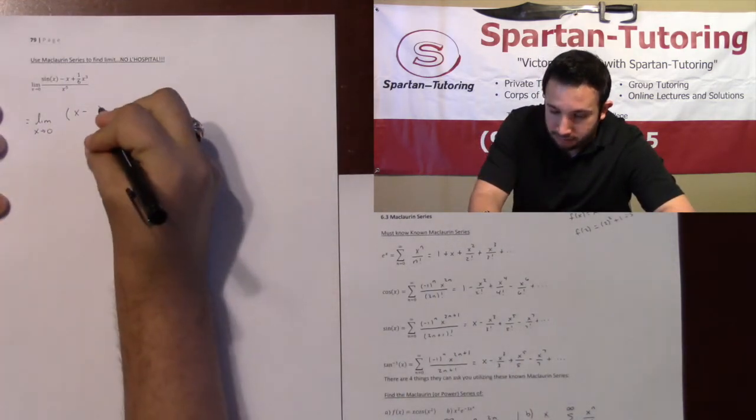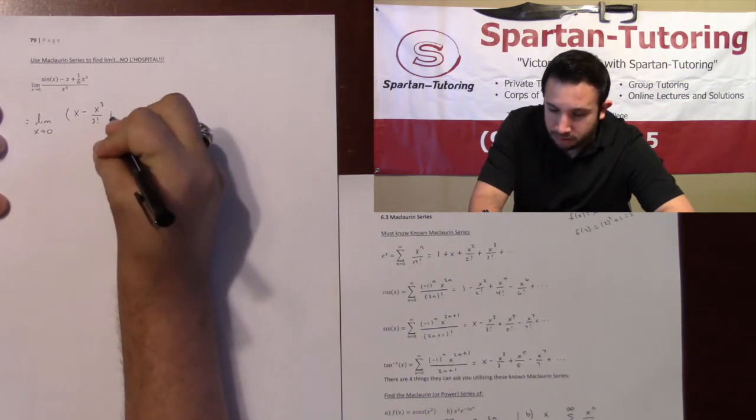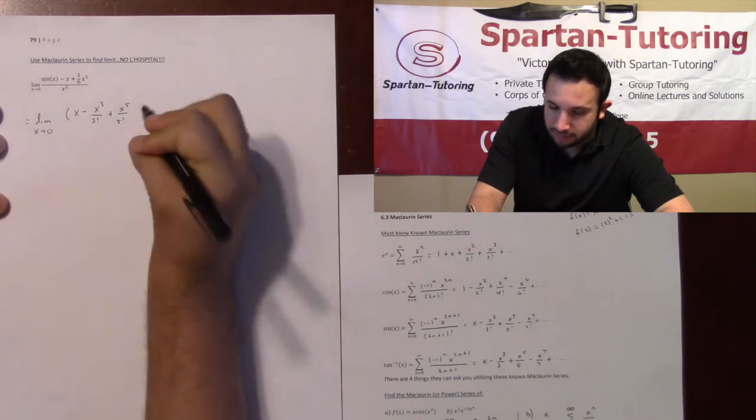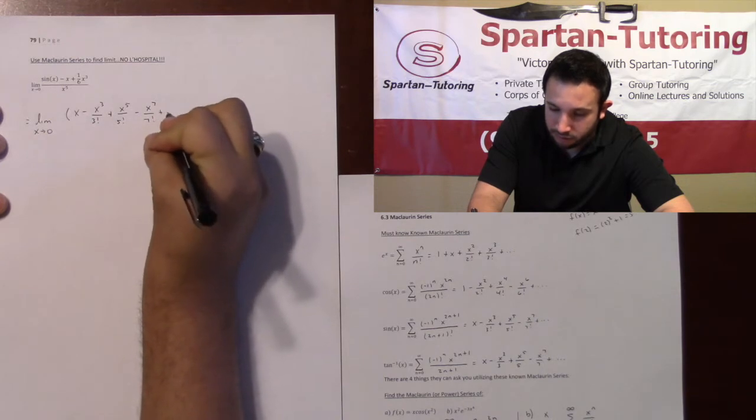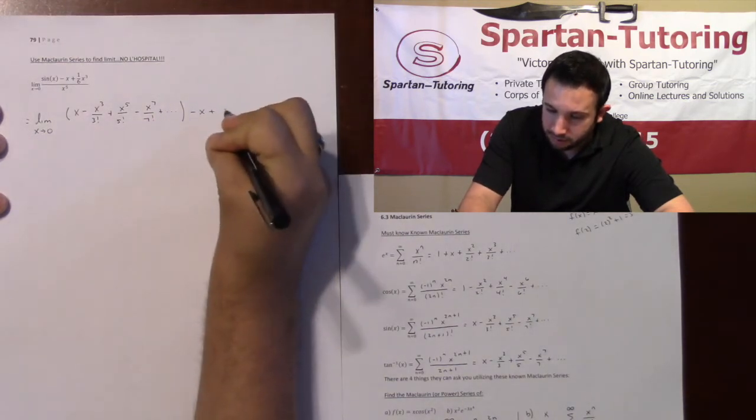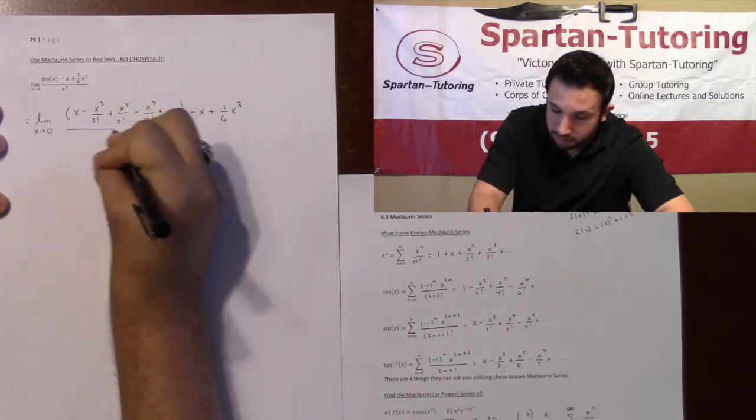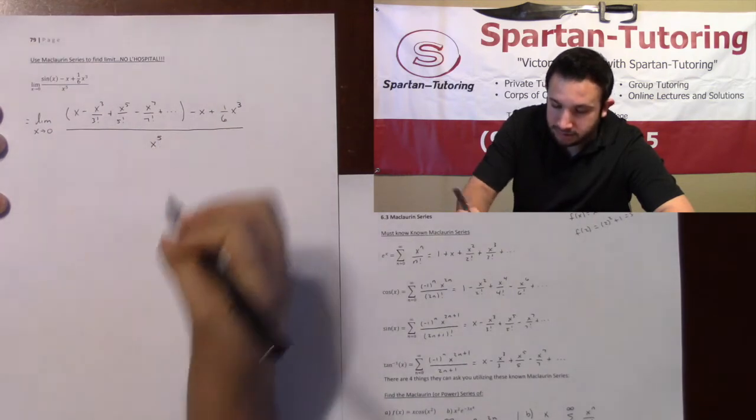So here I have x minus x cubed over 3 factorial plus x to the 5th over 5 factorial minus x to the 7th over 7 factorial and so forth, minus x minus x plus 1/6 x cubed, all over x to the 5th.